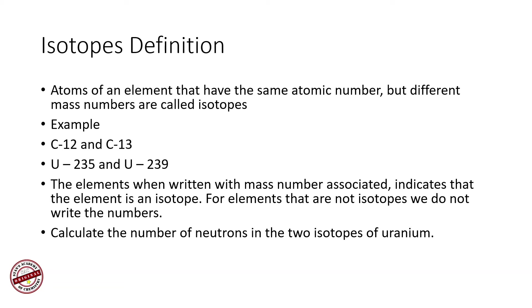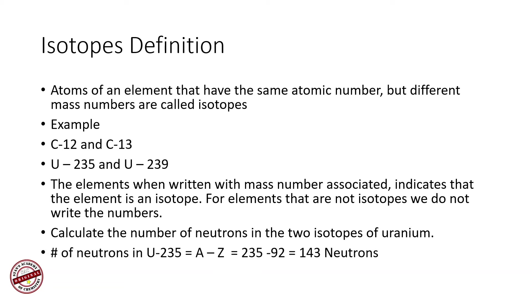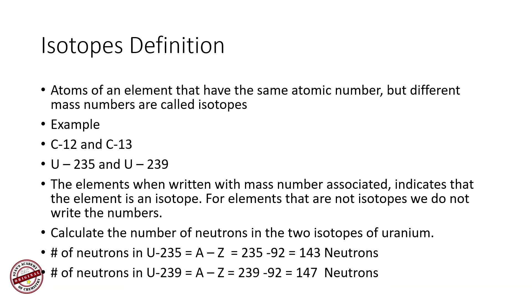Let's calculate the number of neutrons in the two isotopes of uranium. For U-235, the number of neutrons is A minus Z: 235 minus 92 equals 143 neutrons. For U-239, the number of neutrons is 239 minus 92, which gives 147 neutrons. The atomic number of uranium, 92, is obtained from the periodic table.